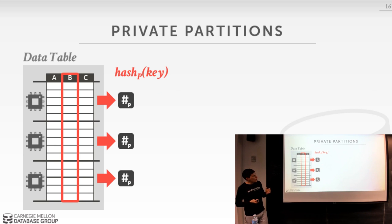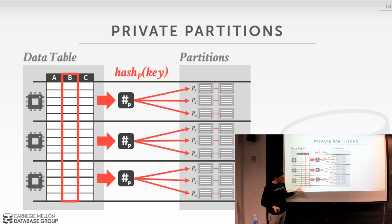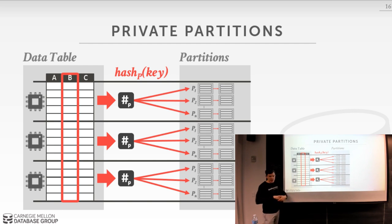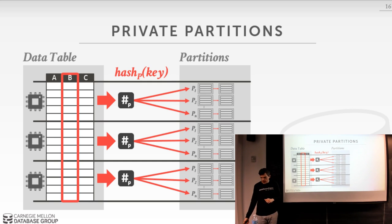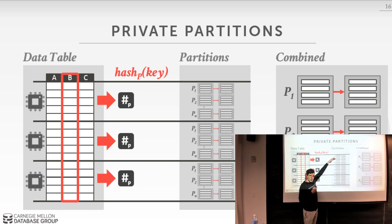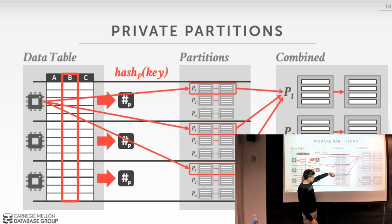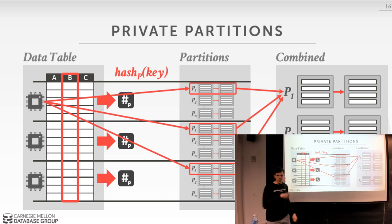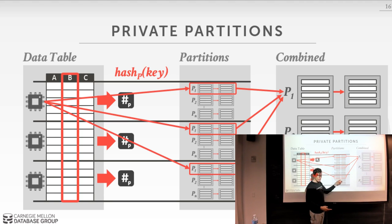With private partitions, initially there's no global shared partition space — each thread has its own local set of partitions, which can stay in the same NUMA region. The downside is that all partitions are subdivided into smaller subsets across all cores. In the next step we need to combine them: each core is responsible for one partition group, going into each memory region for the private partitions, finding its partition, and writing it out to a global combined partition. The combined output partition can be in your local NUMA region, but you're reading from disparate locations.